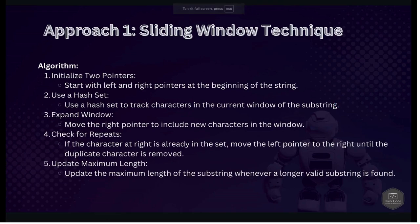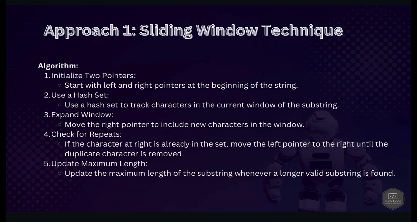Approach one: the sliding window technique. The algorithm works as follows. We initialize two pointers, left and right, both at the beginning of the string, and utilize a hash set to keep track of characters in the current window. We expand the window by moving the right pointer to include new characters. If the character at the right is already in the set, we move the left pointer rightward until the duplicate is removed. We continuously update the maximum length whenever a longer valid substring is found.